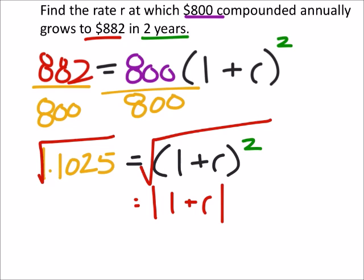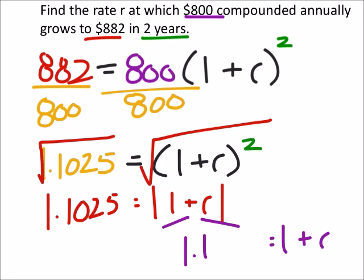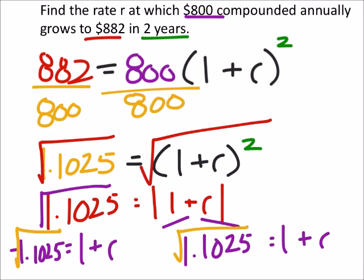Equals plus or minus—yeah I'm sorry, I'm not going to do that yet. We got 1.1025. Now when I split this up, I have one plus the rate equals the square root of 1.1025, and I also have one plus the rate equals the negative square root of 1.1025.